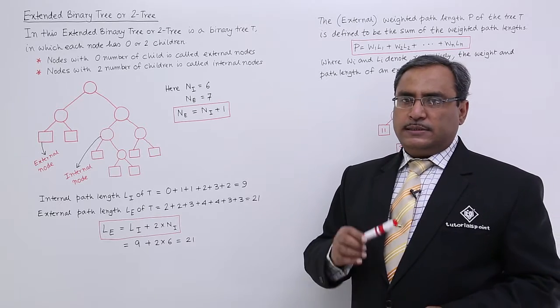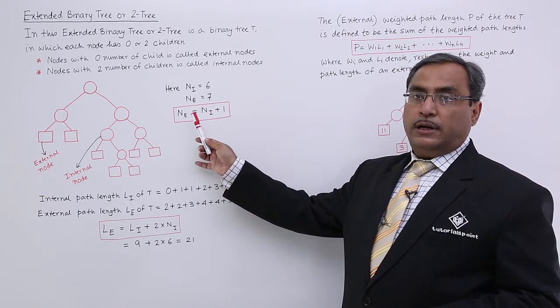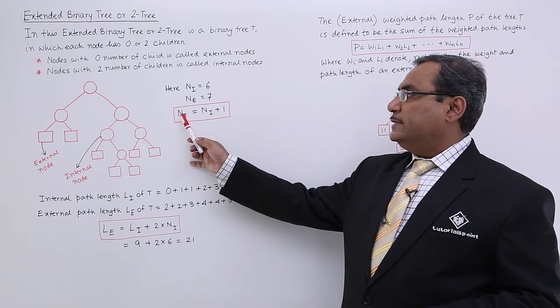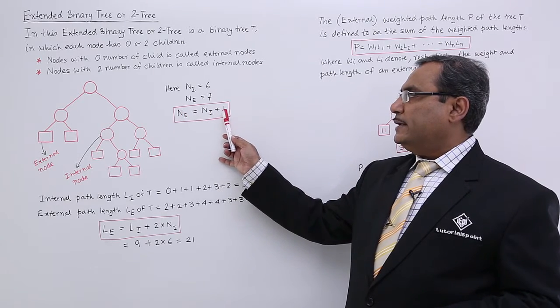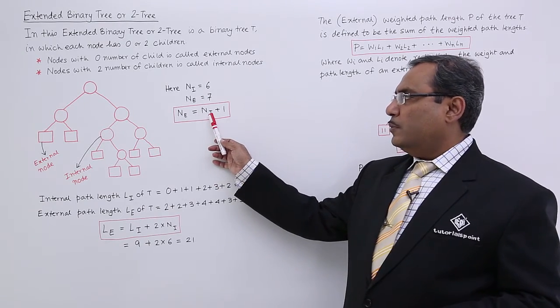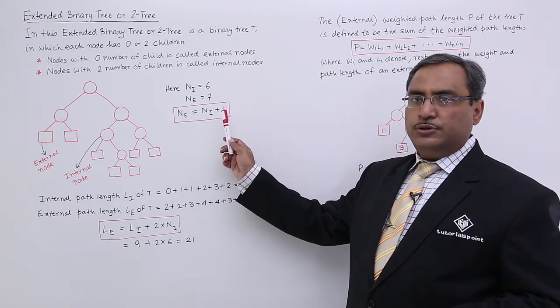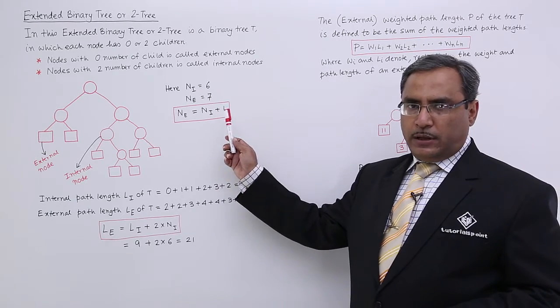And if you go on counting, we will be having always 6 plus 1, 7 number of external nodes. And that is why this particular equation is there: NE is equal to NI plus 1. That is, number of external nodes is equal to number of internal nodes plus 1. So that is one equation you should have to remember, questions will be coming on them.